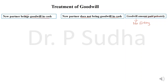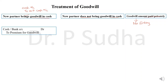When the new partner brings goodwill in cash: when we admit a partner, he brings capital. When he brings capital in the form of cash, the entry is cash or bank account debit to new partner's capital account. At the time of admission, when the new partner brings goodwill along with his capital, the entry is cash or bank account debit to premium for goodwill account.